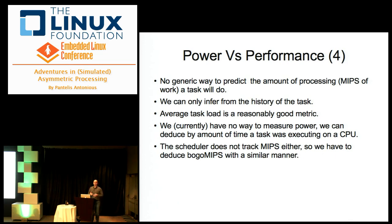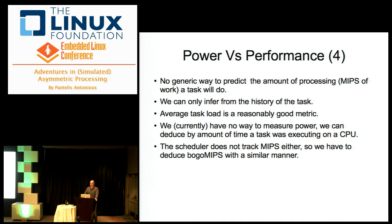The easiest way is to find the average task load — the amount of time a task runs in a one-second period or similar. We can measure the CPU load of a task, but we have no direct way to measure power. However, if we know the relative power efficiency of each core, we can assign a number based on how long a task takes. The problem is the scheduler doesn't track MIPS, power, or power efficiency, so we need a different method to get the scheduler to do our work.